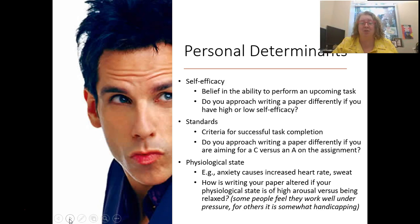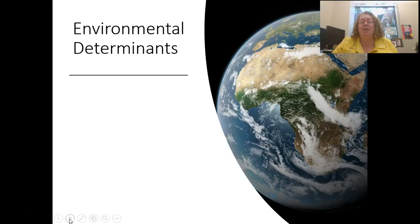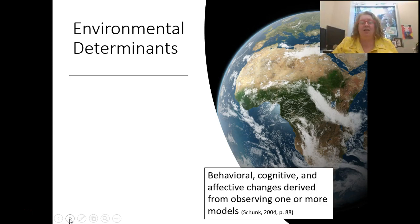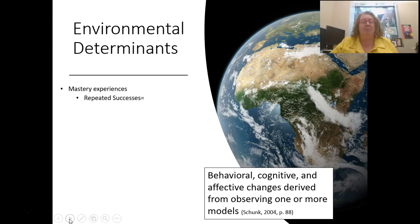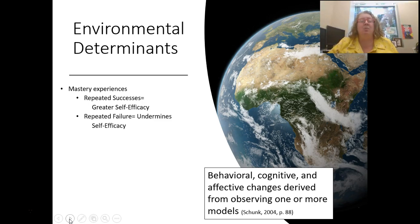Those are three aspects of personal determinants — things inside yourself that affect your motivation or your behaviors. Then we have environmental determinants, things in the outside world. These are behavioral, cognitive, and affective changes derived from observing one or more models. We have mastery experiences: when you have repeated successes, you have greater self-efficacy; repeated failures undermine self-efficacy. Having mastery, depending on your standards, increases self-efficacy and changes your behavior. That's the most powerful environmental determinant.